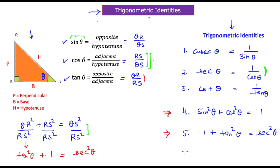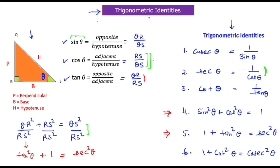The sixth and last standard identity is: 1 + cot²θ = cosec²θ. Proving the sixth identity is a homework assignment — how would you obtain it? In summary, we have six trigonometric identities we can use frequently in calculations.